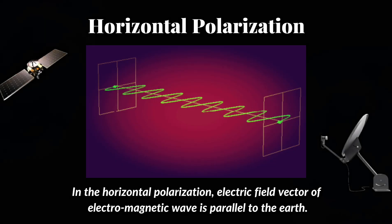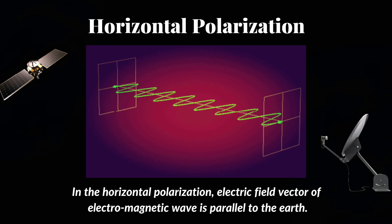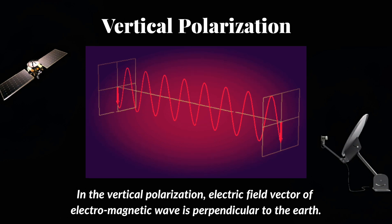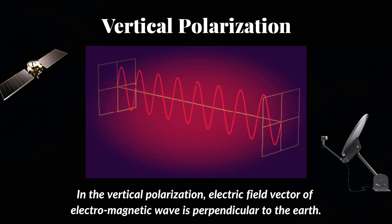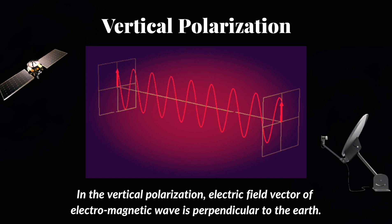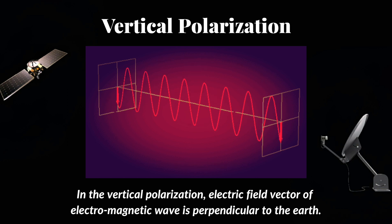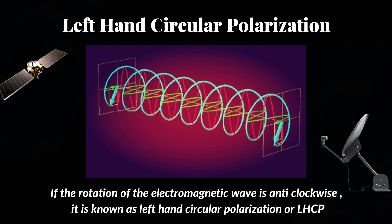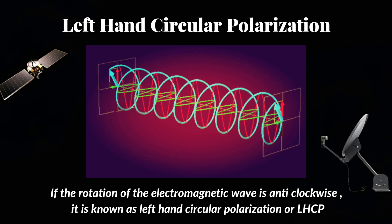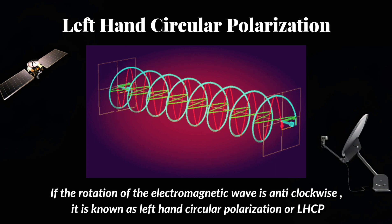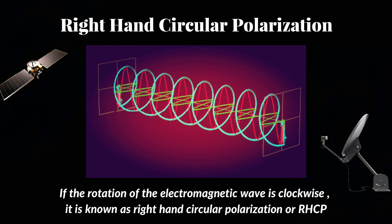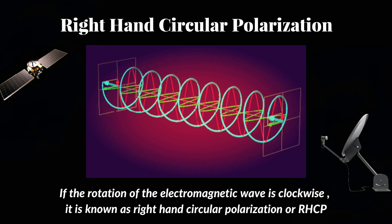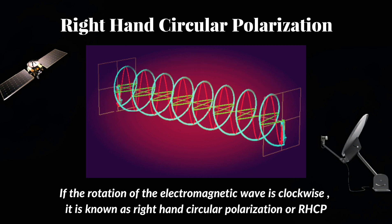Horizontal Polarization: In horizontal polarization, the electric field vector of the electromagnetic wave is parallel to the Earth. Vertical Polarization: In vertical polarization, the electric field vector of the electromagnetic wave is perpendicular to the Earth. Left-Hand Circular Polarization (LHCP): If the rotation of the electromagnetic wave is anti-clockwise, it is known as LHCP. Right-Hand Circular Polarization (RHCP): If the rotation is clockwise, it is known as RHCP.